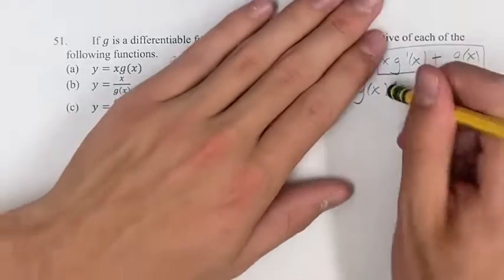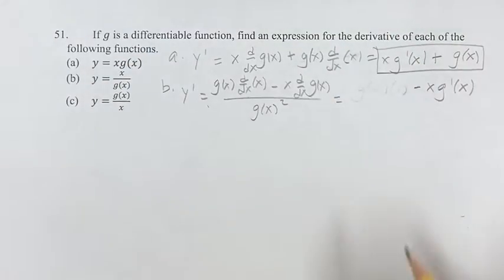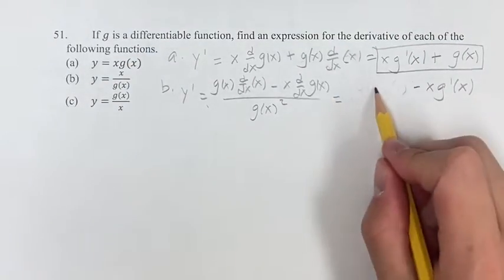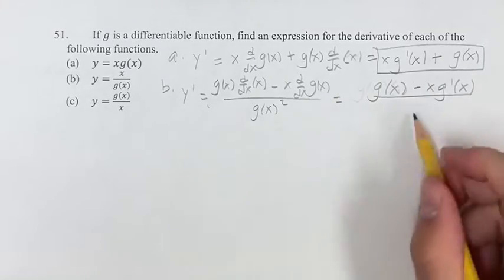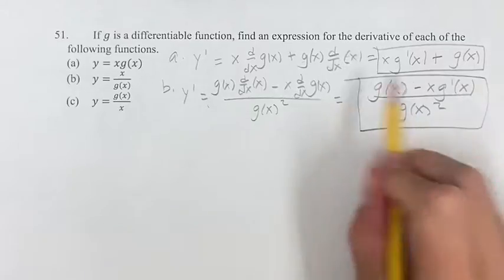And I'm actually going to not even write the 1 in. To make things a little bit simpler, since g of x times 1 is just g of x, I'm just going to keep it as g of x. And then we have g of x squared on the bottom. This is your answer to b.